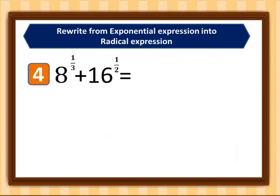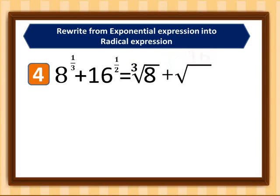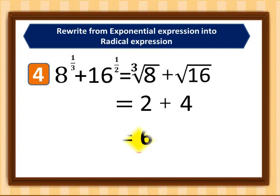For the fourth example: eight raised to one-third plus 16 raised to one-half. The first term gives us the cube root of eight, and the second gives us the square root of 16. The cube root of eight is two, and the square root of 16 is four. Two plus four equals six.